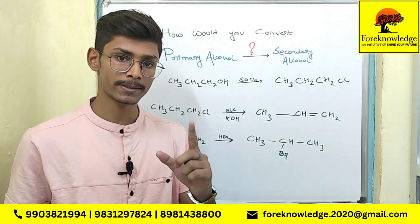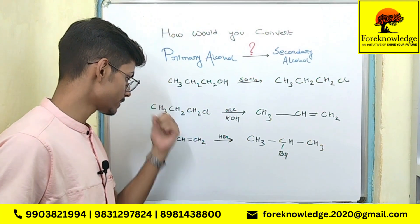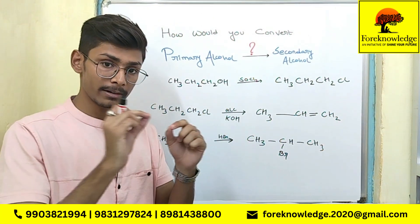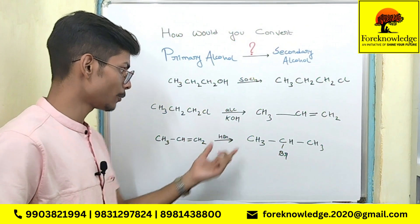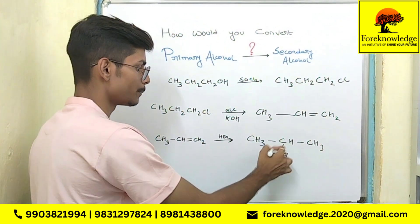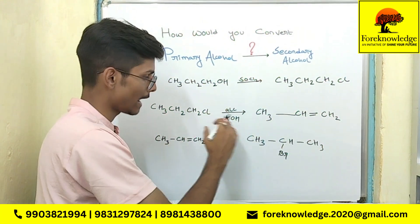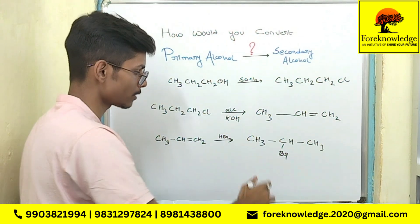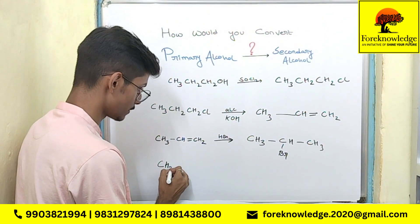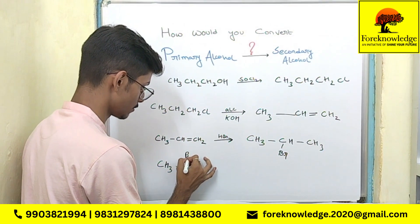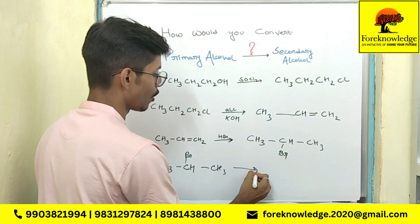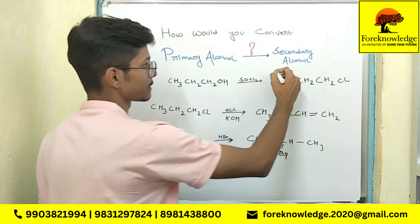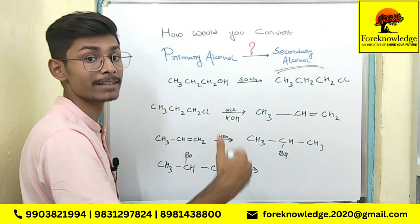In the last step, we will react this with aqueous KOH. Do not get confused: in the second step, alcoholic KOH reacts with alkyl halide to form a double bond, but in this step, aqueous KOH simply replaces Br with OH. So CH₃CHBrCH₃ on reacting with aqueous KOH will give us the final product — that is secondary alcohol, or two degree alcohol, or isopropyl alcohol.